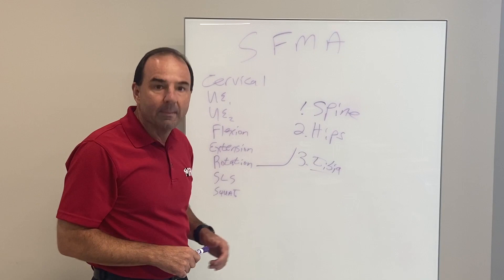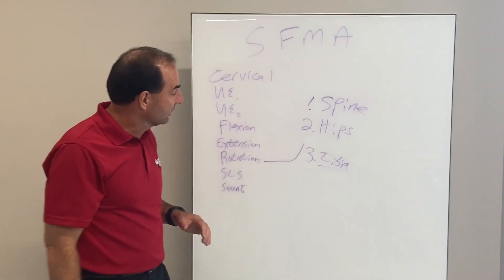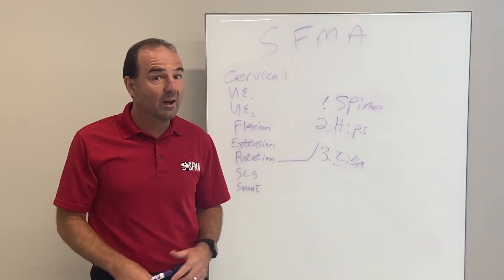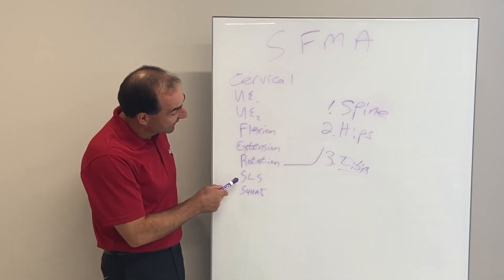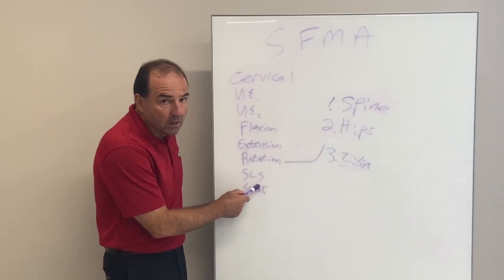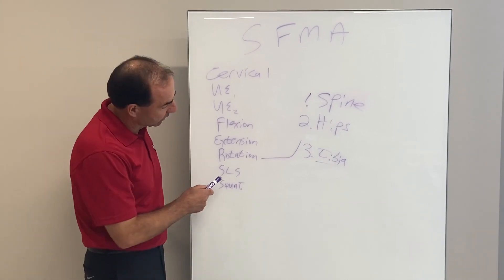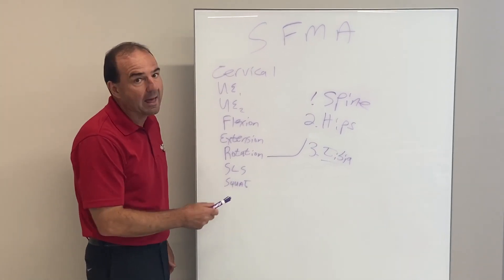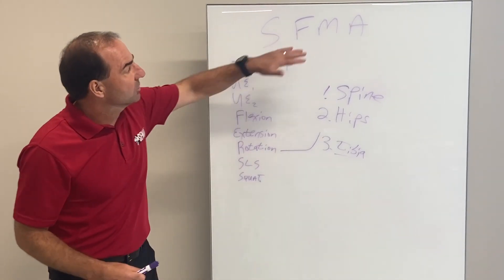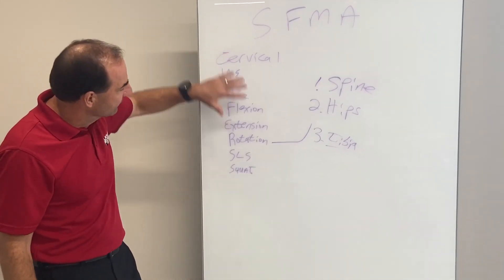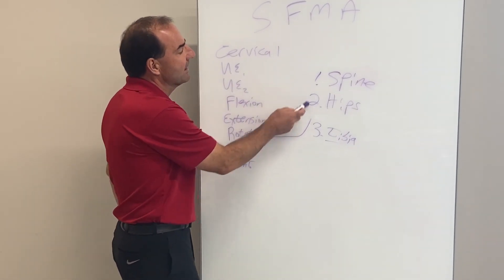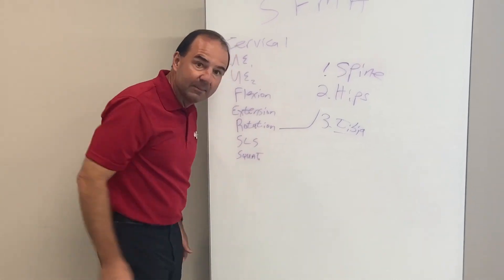Many of you may be thinking: what about foot and ankle? There's supination and pronation going on as well. And there is — but we catch that in our single leg stance and squat patterns. So even though supination and pronation are part of it, we're going to catch that dysfunction in a couple of other patterns in what we call our breakouts. So: Selective Functional Movement Assessment, seven top-tier patterns, all related. We break out rotation — spine and hips are obvious. Don't forget about the tibia.